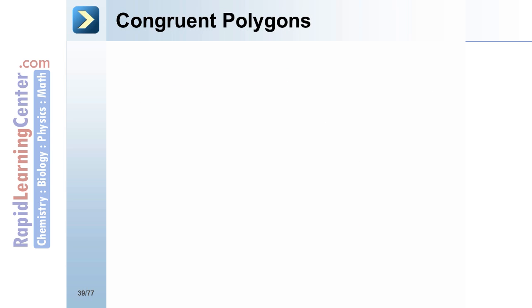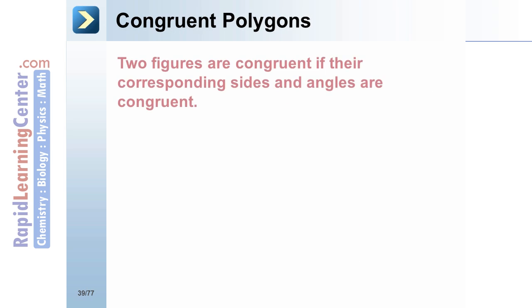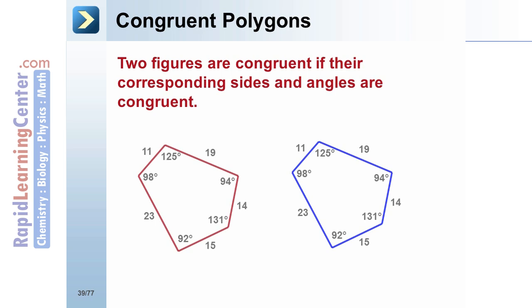Congruent polygons: two figures are congruent if their corresponding sides and angles are congruent. These pentagons are congruent because their corresponding parts are congruent.